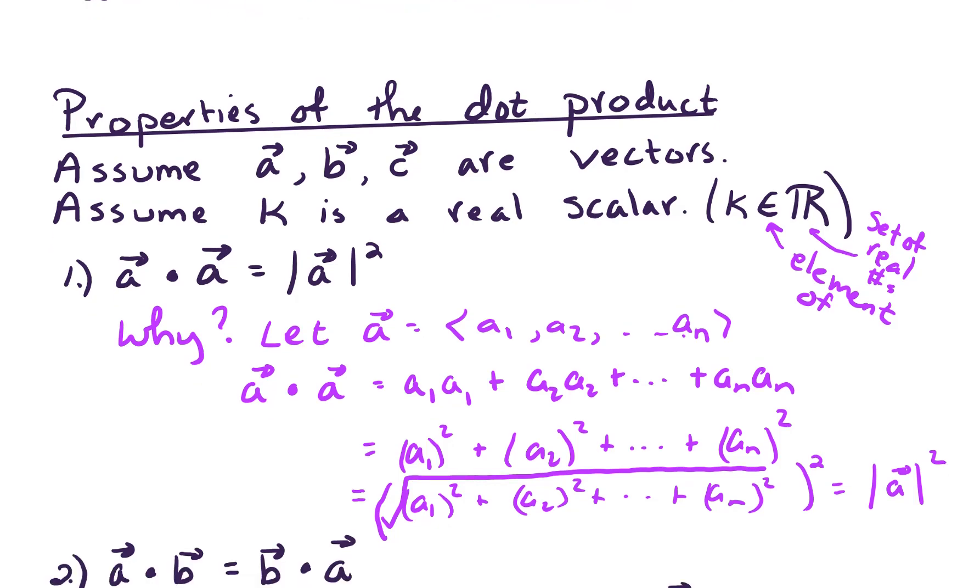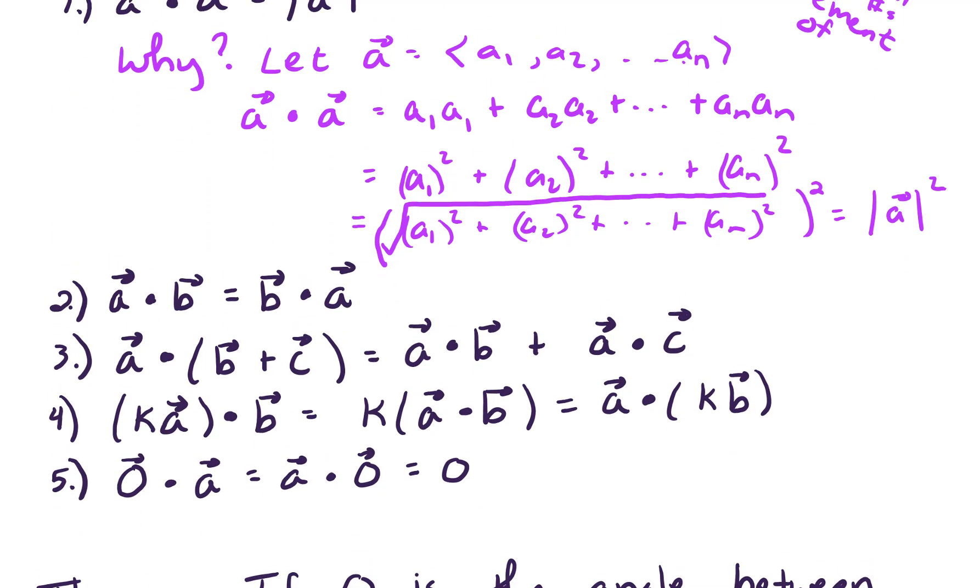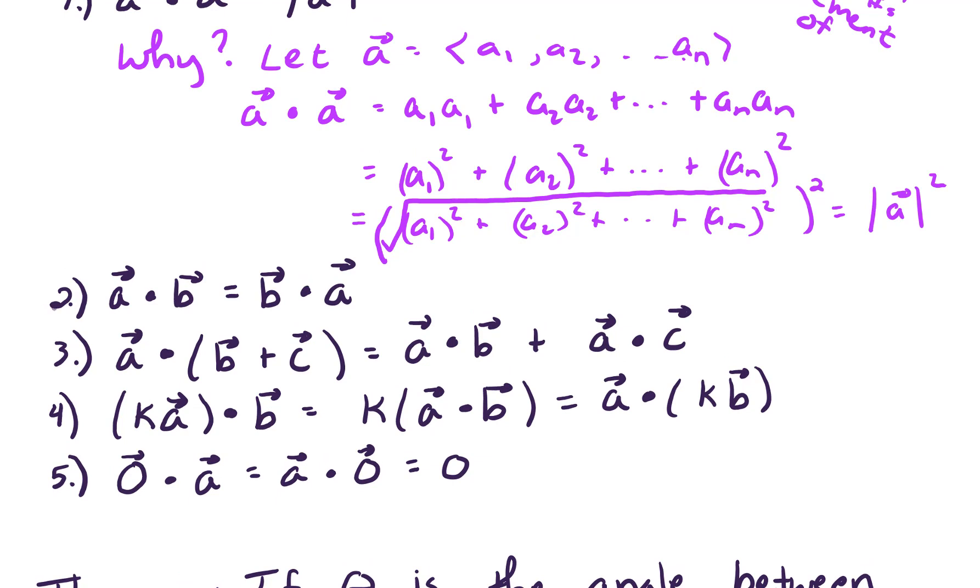Okay, let's look at some of the other properties. So the second property says that the dot product is commutative: a dot b is equal to b dot a. Third property says that we've got kind of a distributive property here. So a dot the sum of b plus c equals a dot b plus a dot c.